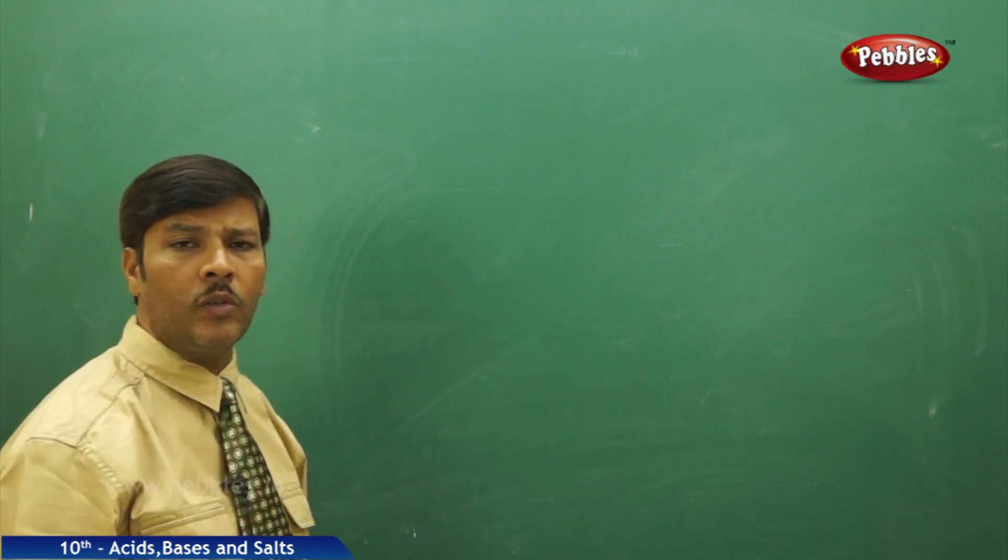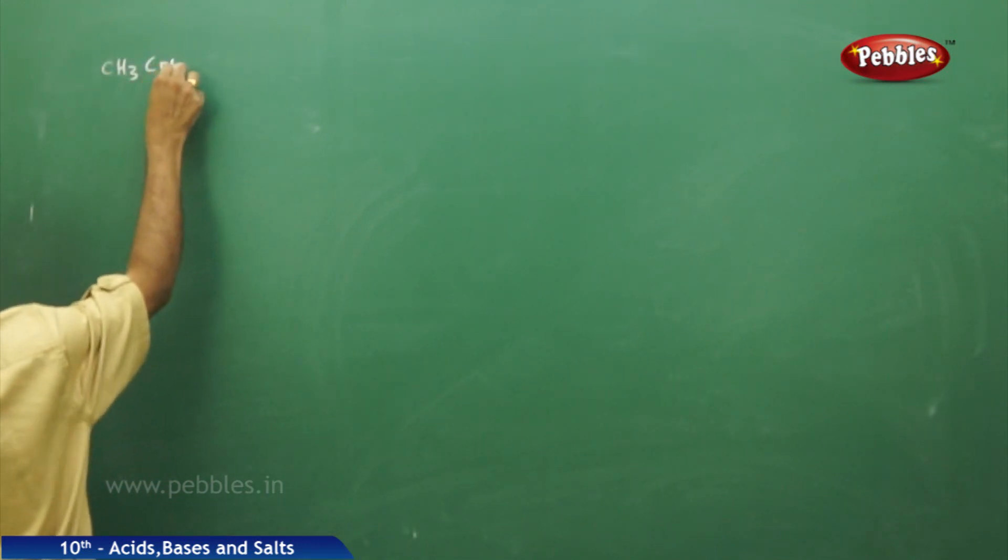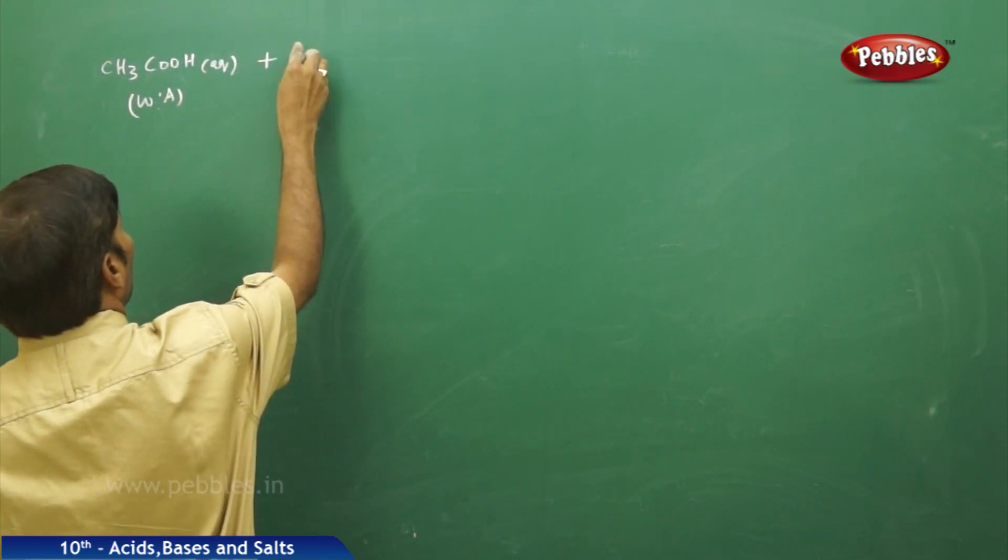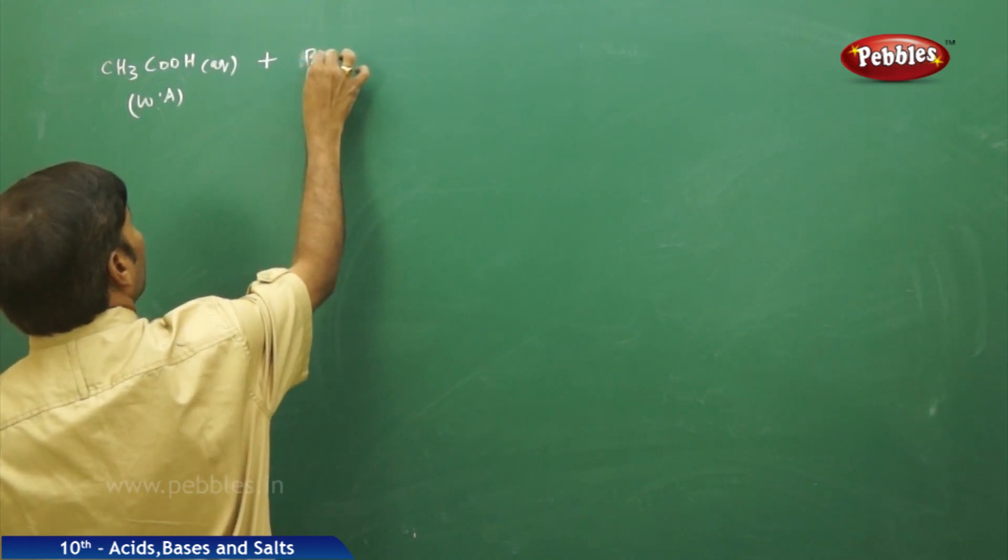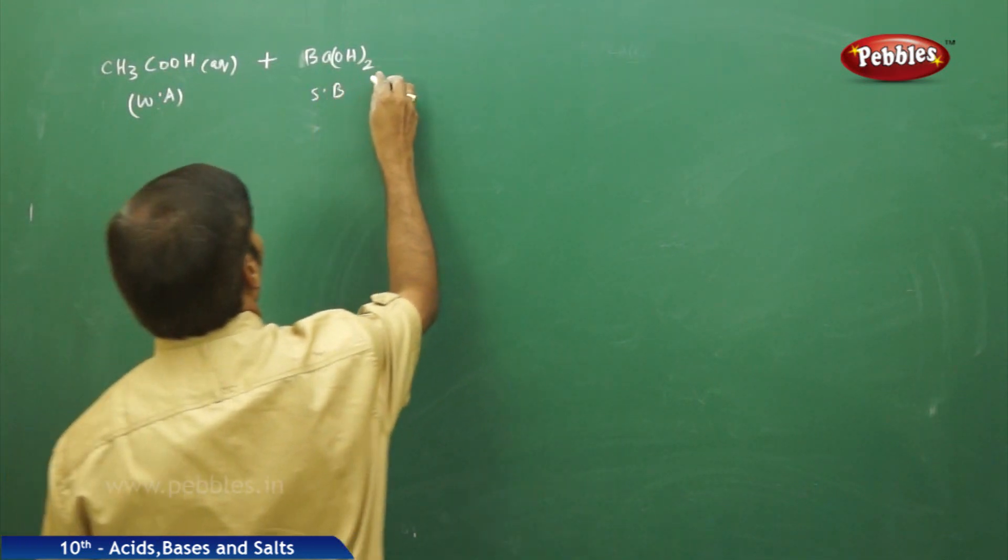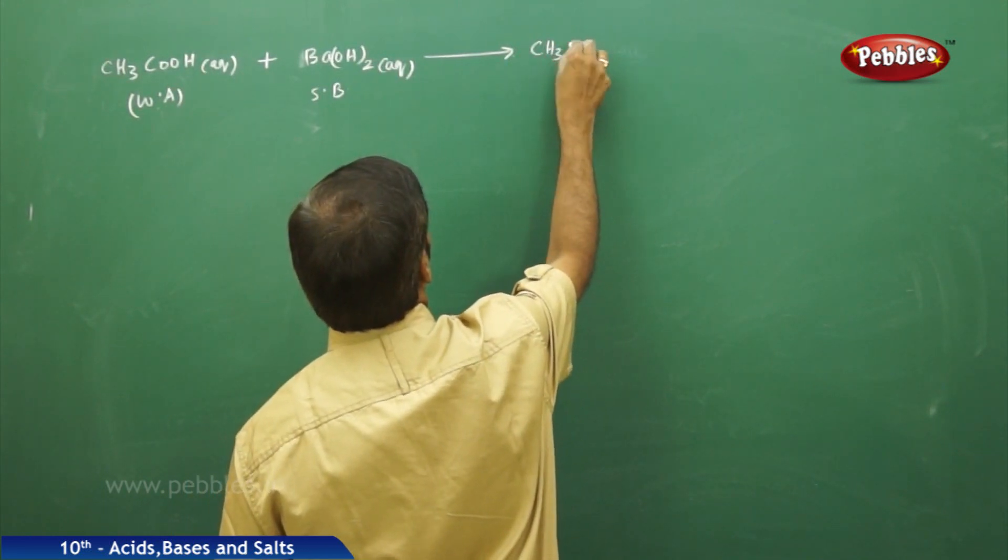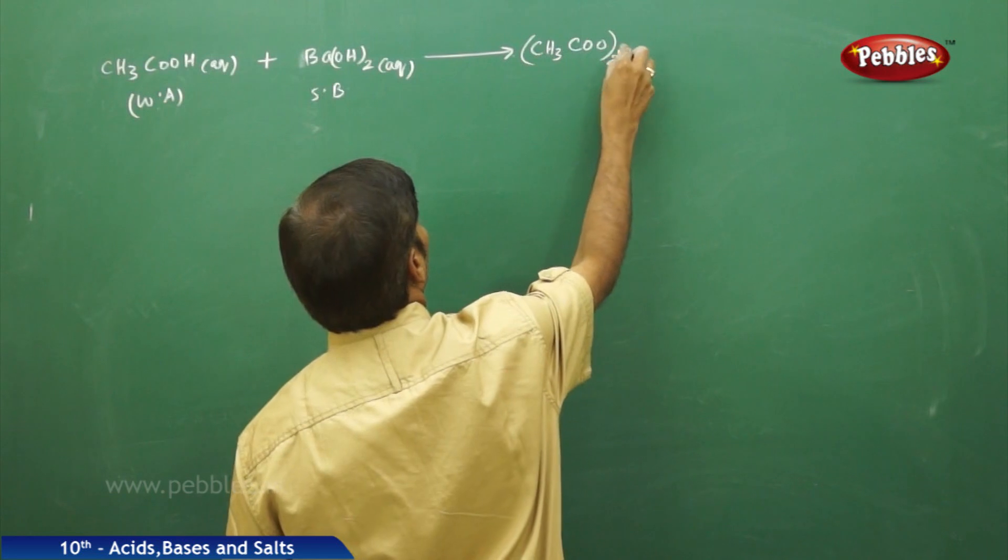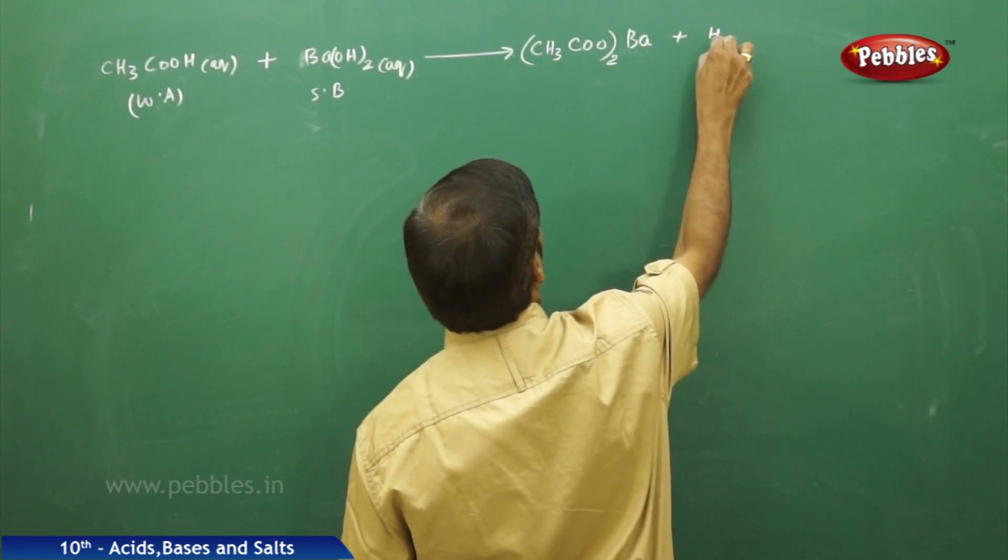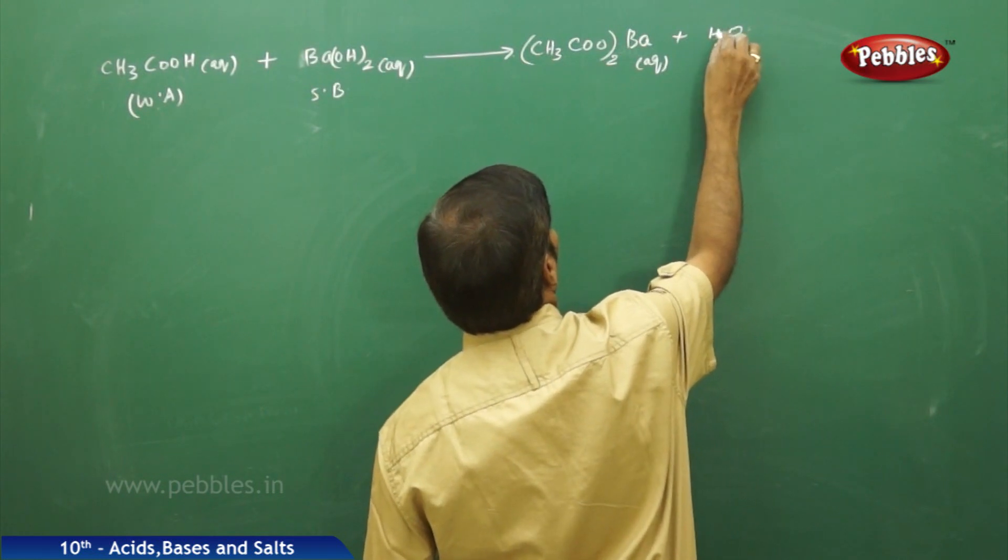I would like to give one more example for neutralization reaction. Say for example, I am taking a weak acid, acetic acid aqueous. It is a weak acid reacts with a strong base, that is barium hydroxide, strong base aqueous to give a salt, that is barium acetate, taken twice CH3COO-Ba, barium acetate plus water, aqueous water liquid.